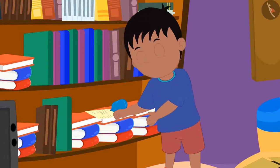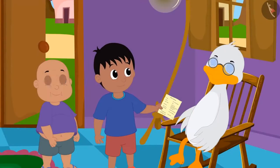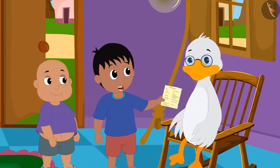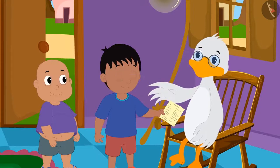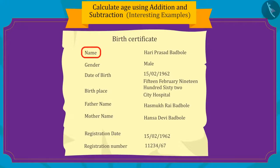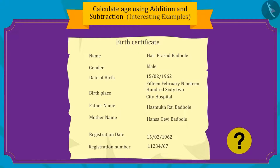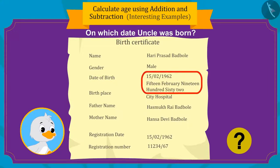Raju and Bablu are helping Uncle in cleaning his house. They found a piece of paper among Uncle's files and asked Uncle about it. Uncle told them that it is his birth certificate. Uncle explains that a birth certificate is issued at the time of every person's birth, and important information is written on it, such as the person's name and date of birth. Uncle was born on February 15th, 1962.